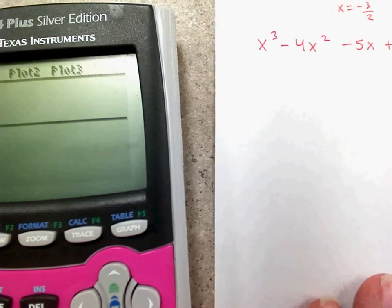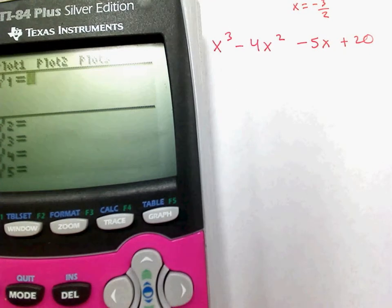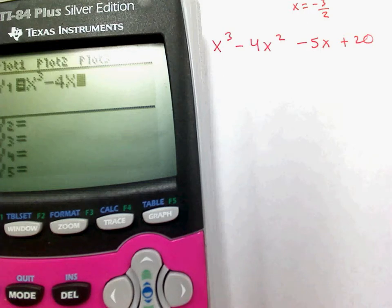I'm going to find the zeros. So, y equals x raised to the third, minus 4x squared, minus 5x, and then plus 20.